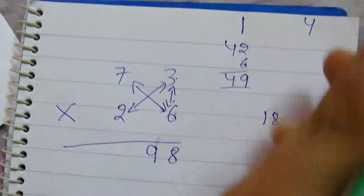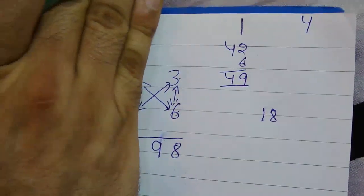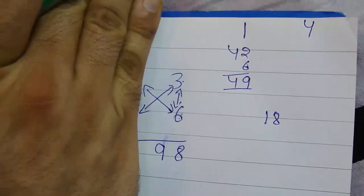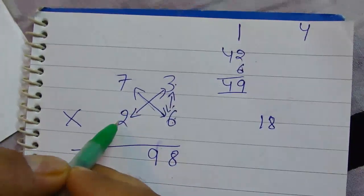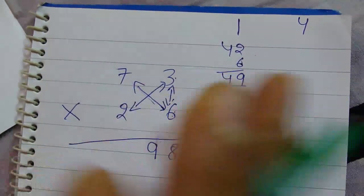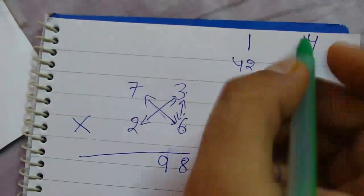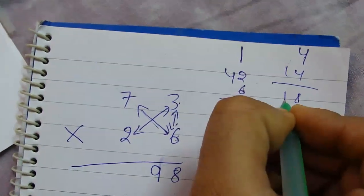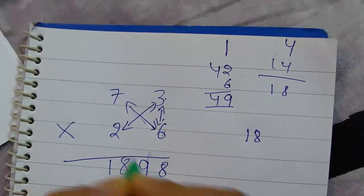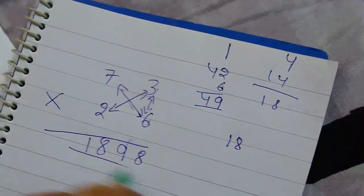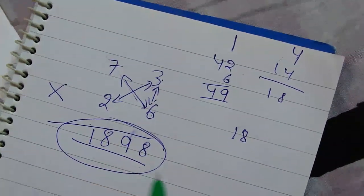Now, first we did 6 times 3 equals 18, and second step we crossed these two numbers. After that, we multiply 2 times 7 equals 14, and 4 is carried over. So here is the answer: 1898. You can do it fast.